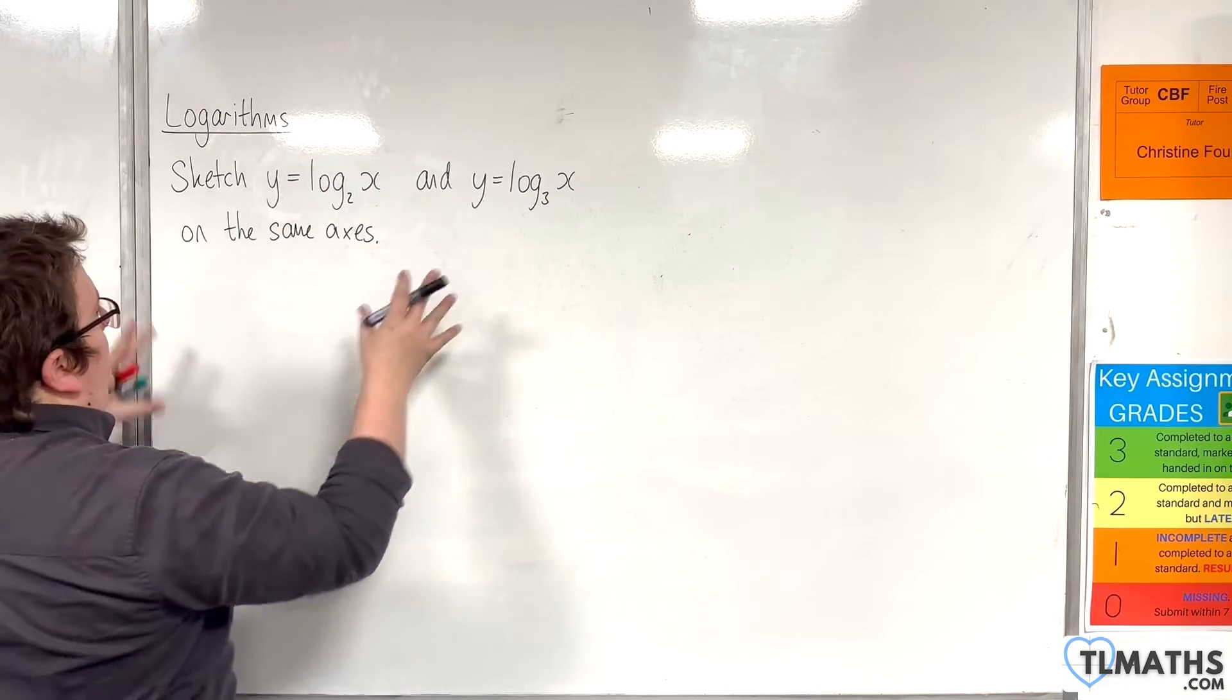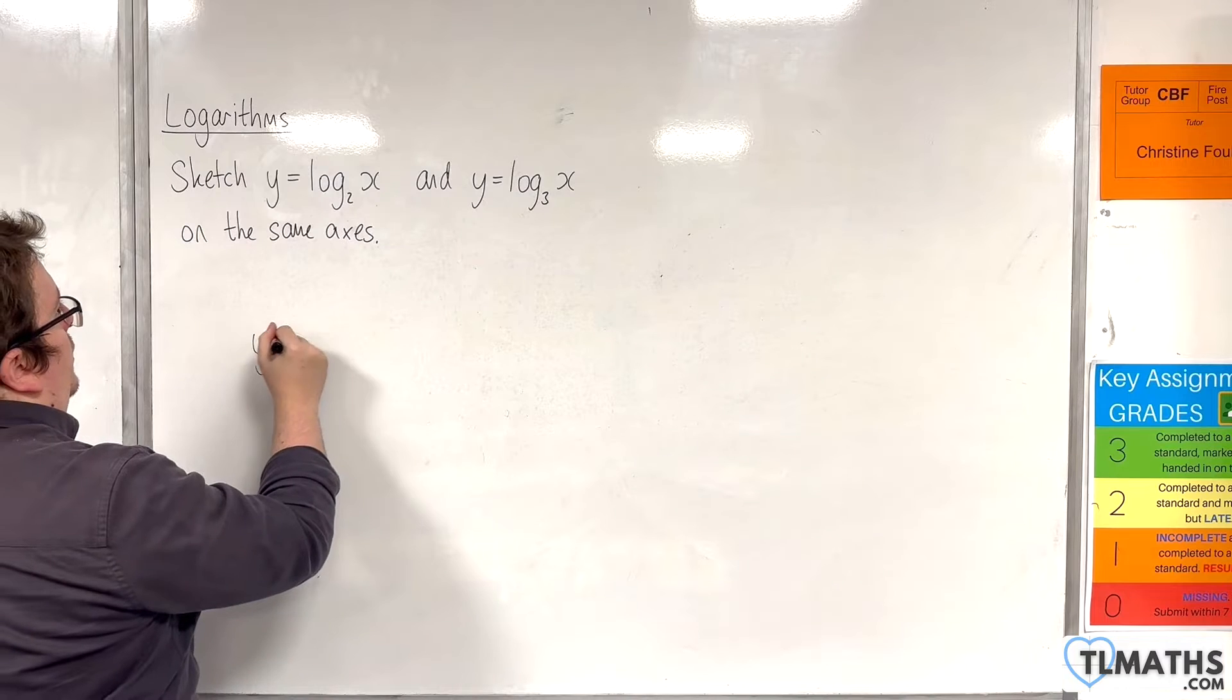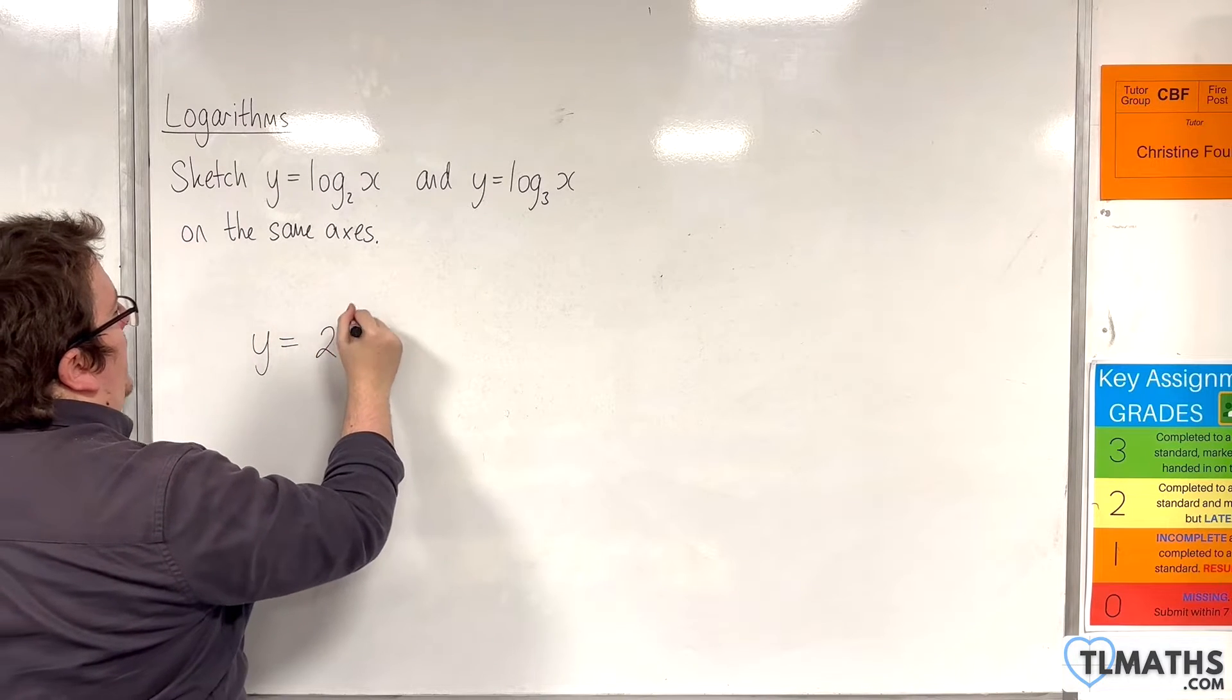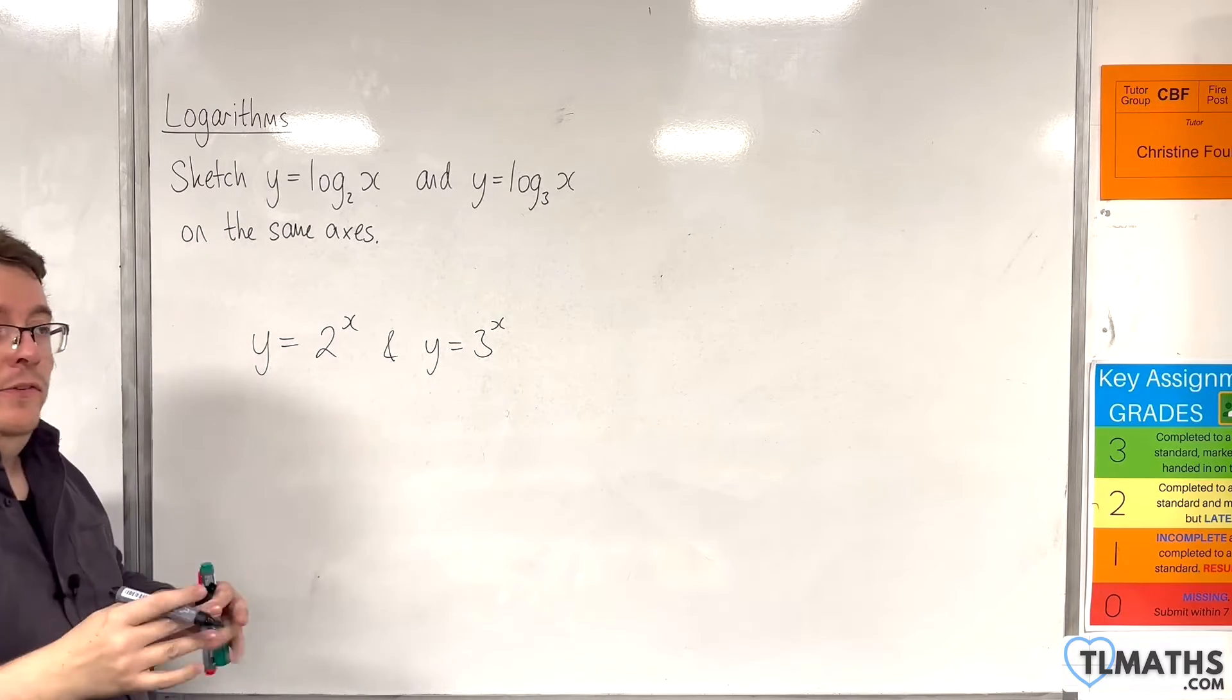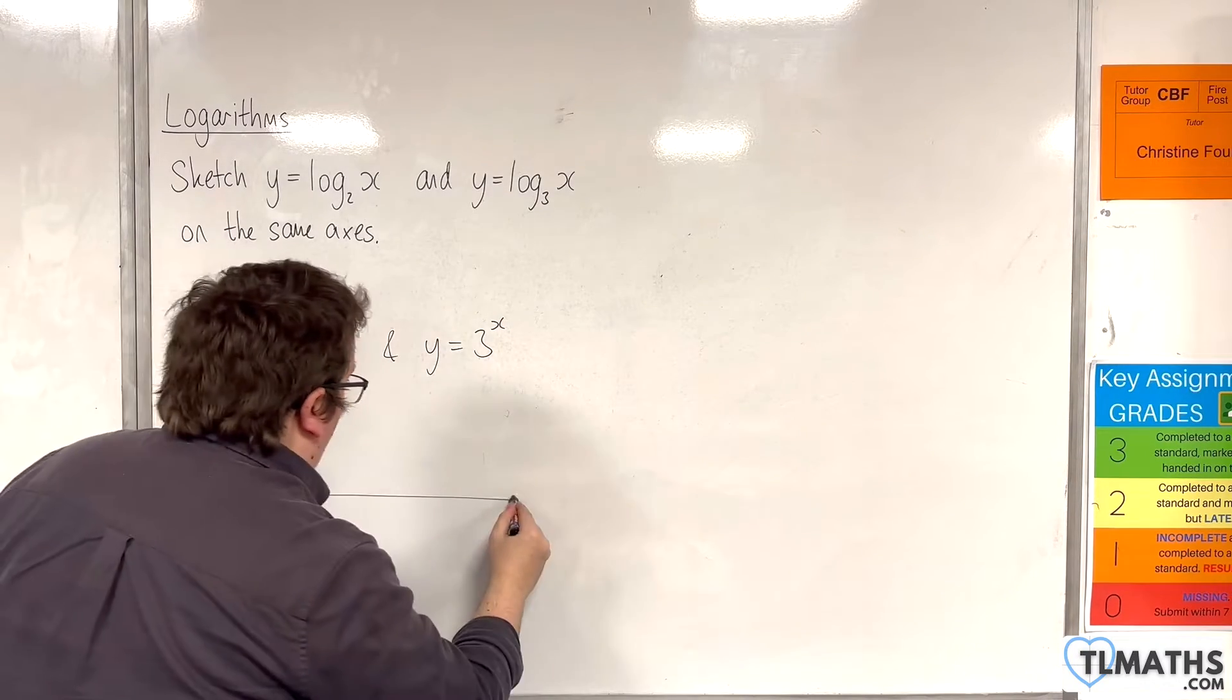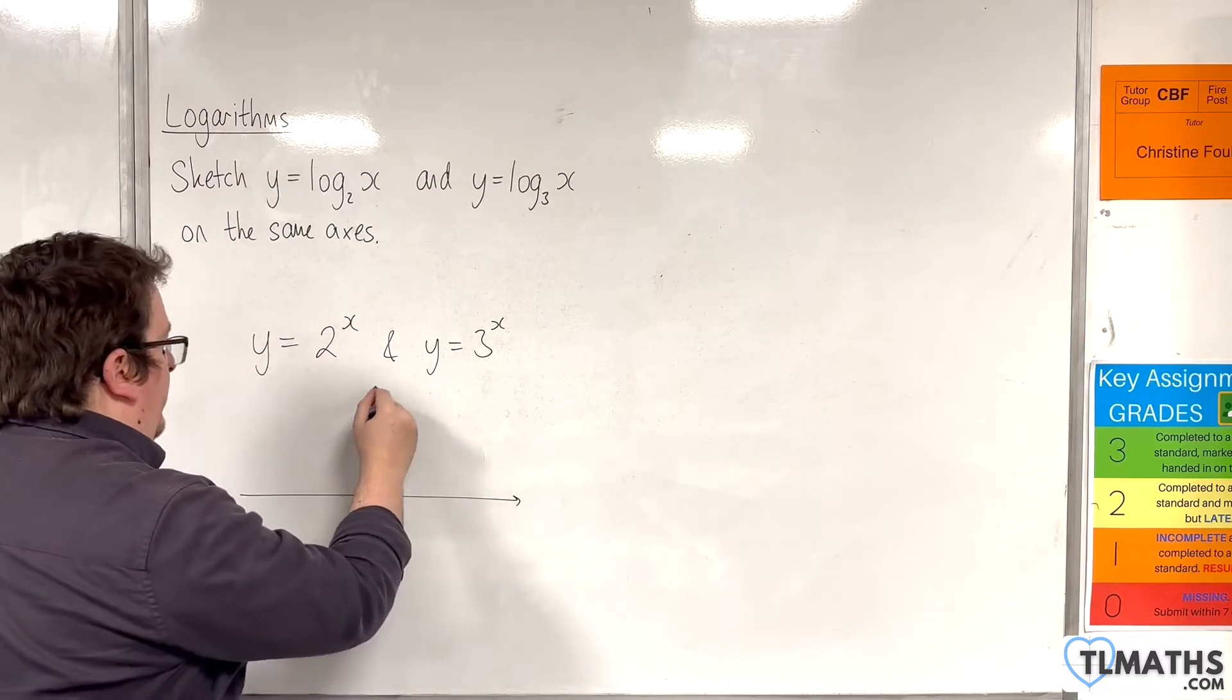Rather than go straight into that, I'm going to take a look at y equals 2 to the x and y equals 3 to the x first. Now, we've seen this already, but it's good to kind of revisit it.